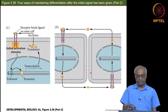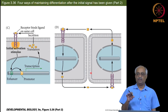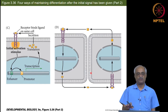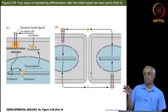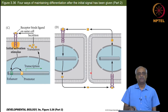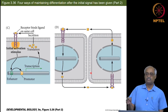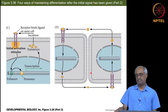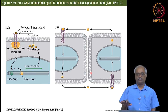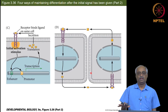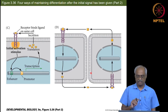So these are four different models to explain how the altered state of transcription is maintained. The word 'altered' is used carefully because it is not always activation or inactivation — as a consequence of one particular signalling event, some genes may be activated while others are inactivated, and these models explain how that altered state may be maintained.